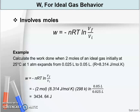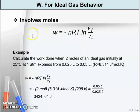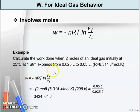There is another formula to calculate work for an ideal gas involving volume change: W equals negative nRT ln(V_final over V_initial). You need to know this formula. For example: calculate the work done when 2 moles of an ideal gas initially at 25°C and 1 atm expand from 0.025 liters to 0.05 liters.